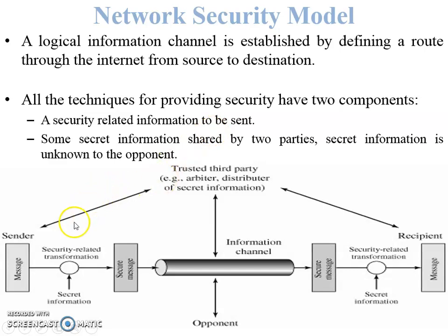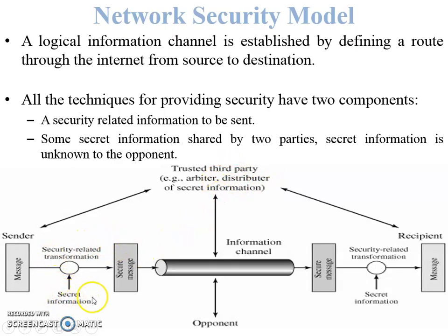The first component is security-related information: the plaintext message is converted into a secure message using secret information. The secret information is passed from sender to receiver through the logical information channel using a trusted third party, also called the key distributor. The key distributor sends this secret key from sender to receiver, and then the secure message — converted from plaintext to ciphertext using the secret information — is passed through the secure network.